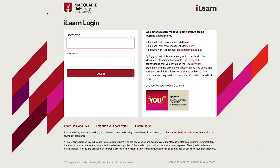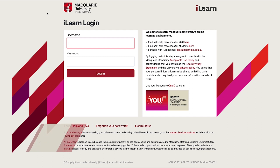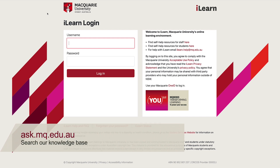That's all for this eStudent tutorial series. Should you have any further questions, you can always call Student Connect on 9850 6410 or submit an enquiry at ask.mq.edu.au. You can also search our knowledge base for frequently asked questions and answers. From all of us here, we wish you good luck and all the best for your future studies at Macquarie University.